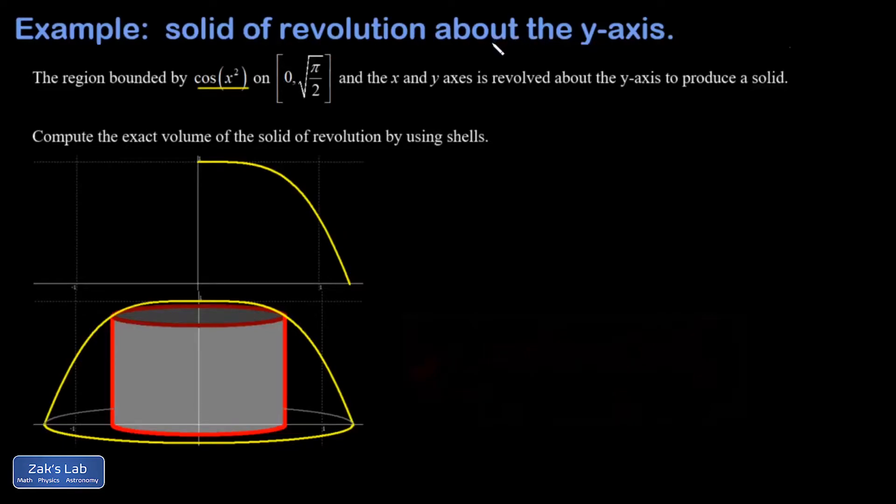In this video we're computing the volume of a solid of revolution that is formed by taking the curve cosine of x squared and the x and y axes on this given interval of 0 to root pi over 2 and spinning that whole region around the y-axis, forming the solid that you see in the bottom picture below.